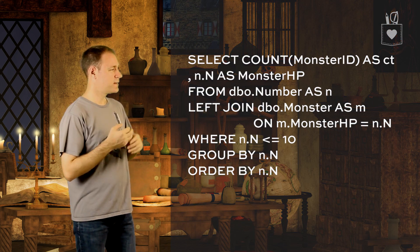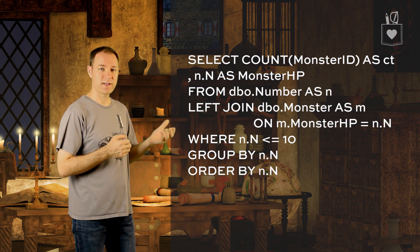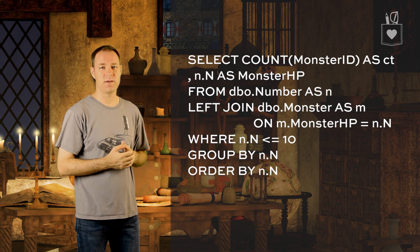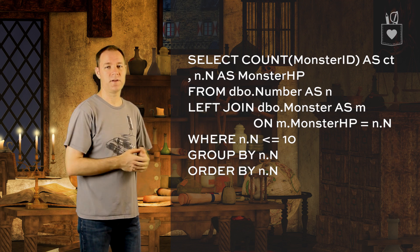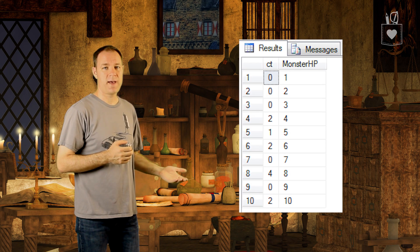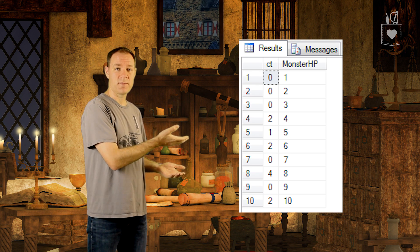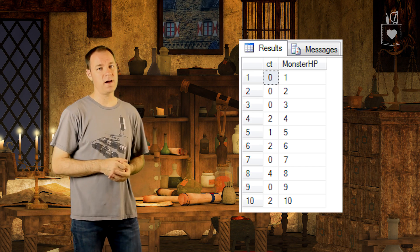The way to do that is to rewrite our query using the number table as our source and join to the monster table. Instead of selecting from the monster table, we select from the number table and then join back to the monster table, joining the monster HP to the number field in the number table. In doing this, we get all the rows back from the number table, and if there is a count of monsters attached to that HP value we'll see it — if not, there won't be anything there. I've used this technique more times than I can remember; it's so simple and effective. Keep it in mind anytime you are faced with coding for a skeptical audience.